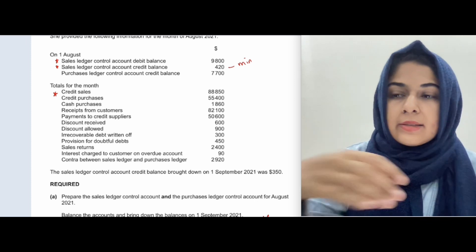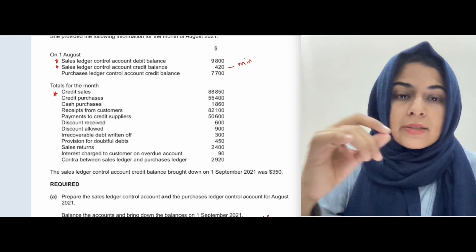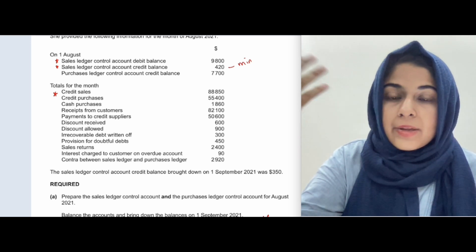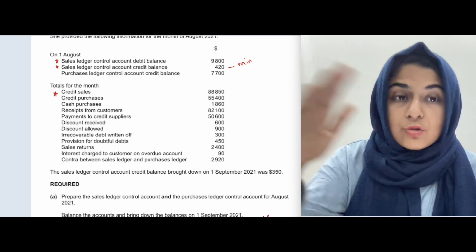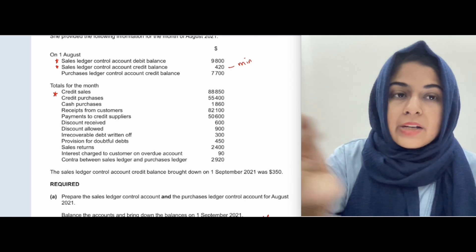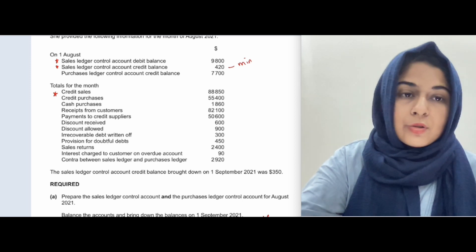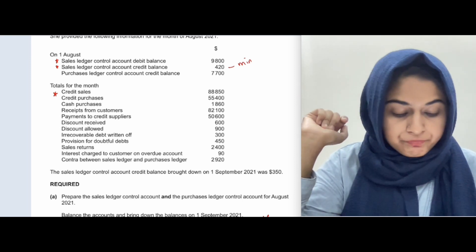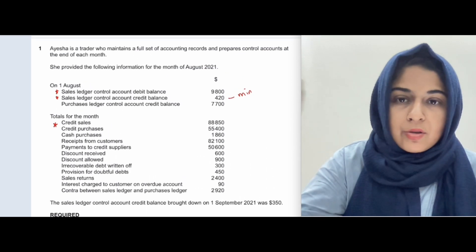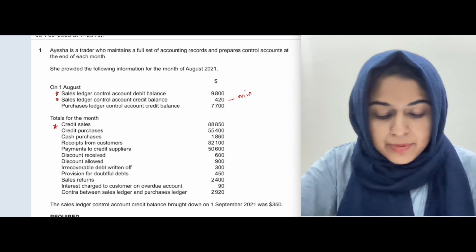Cash sales means you sell goods and take money immediately, so there is no receivable created. In credit sales, you sell goods and receive the money in the future. Until the customer pays, that trade receivable remains your asset in the books of accounts. Trade receivables are created only because of credit sales, not cash sales.